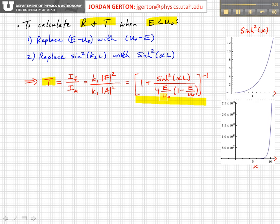This is less than one, so this denominator here, for example, for E over U₀ is equal to a half, this denominator will be equal to one. So it's on order of one for many situations. And then we have the sinh squared, and then this whole quantity is inverted. So this is all to the minus one.